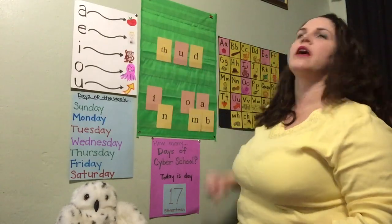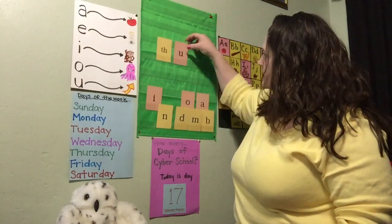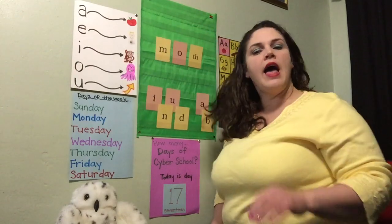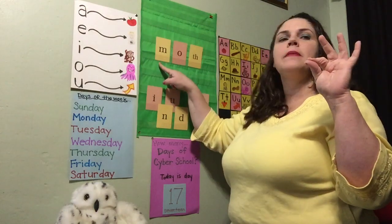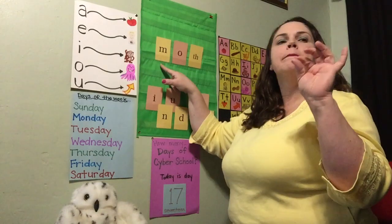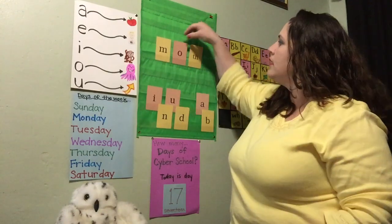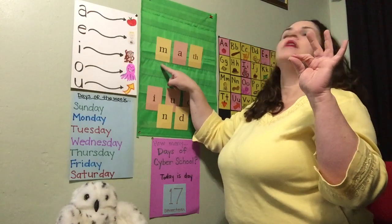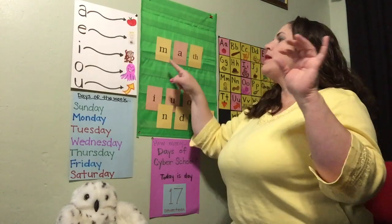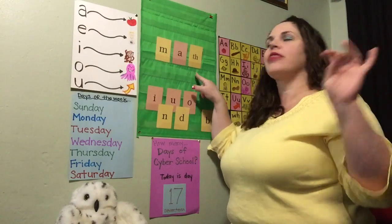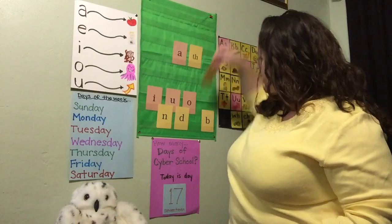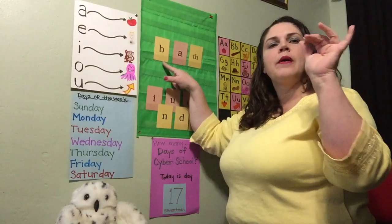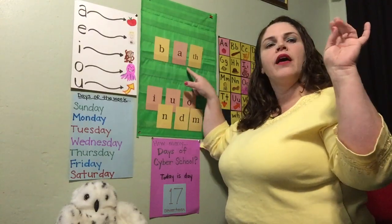And sometimes we're going to hear that TH sound at the end of words. So I'm going to move TH to the end. Elbows up, thumb and pointer finger together: M, A, TH — MATH. One more time: M, A, TH — MATH. Let's change that beginning sound. One more word — elbows up, thumb and pointer finger together: B, A, TH — BATH. One more time: B, A, TH — BATH.